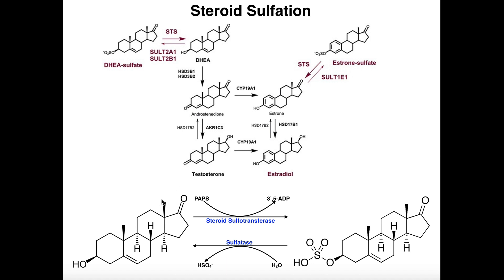This is a steroid sulfotransferase, and there are multiple isoforms of this enzyme. They're usually abbreviated SULT and then some numerical designation like 1E1, 2A1, or 2B1. There are actually a lot more that act on other types of molecules — these just happen to have specificity for these types of steroids. 1E1 is apparently specific for estrogens, whereas 2A1 and 2B1 are specific for androgens.